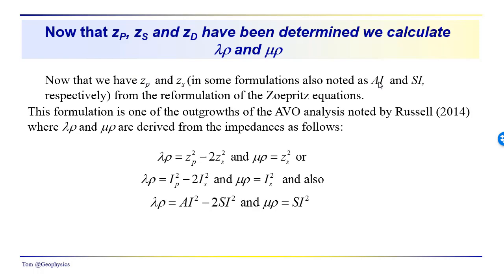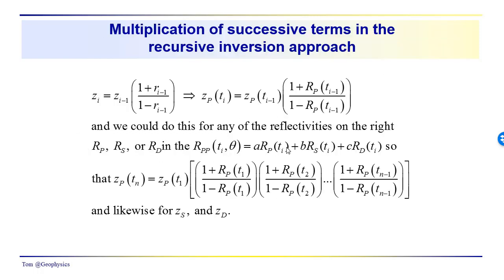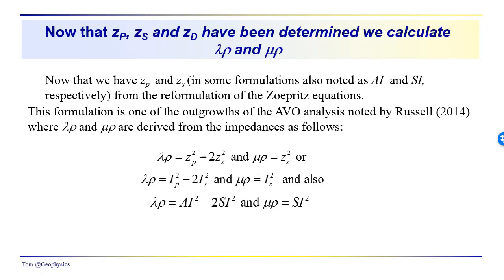Remember, in some formulations, the compression wave impedance is referred to as AI, and the shear wave impedance is SI. We've been looking at different reformulations of the Zoeppritz equations, and this is just one reformulation of that relationship. So these formulations are an outgrowth of the AVO analysis that Russell provides a nice summary of.